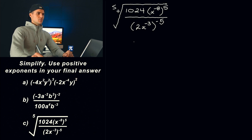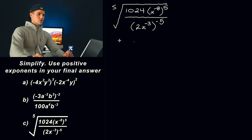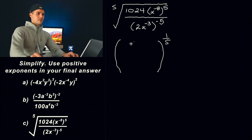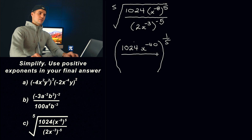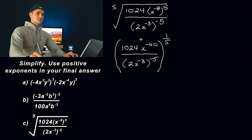Moving on to part C, we got the fifth root of this entire expression — 1024 x to the negative 8 to the power of 5, all over 2x to the negative 3 to the power of negative 5. Whenever I see any roots, I like to change them to rational exponents. So instead of having the fifth root of all of this, it's basically going to be all of that to the power of one over five. Let's simplify: I'll multiply the negative 8 and the 5 to get x to the negative 40 in the numerator. I'm not going to do anything with the denominator yet.